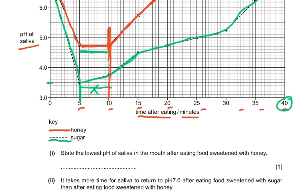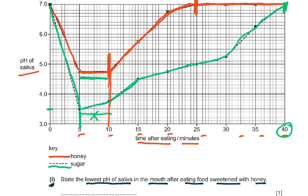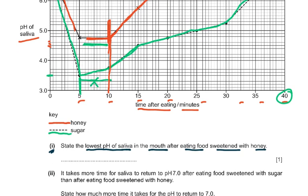Question: state the lowest pH of saliva after eating foods sweetened with honey. Looking at the graph, the lowest point for honey is approximately 4.75. So the answer is 4.75 — remember to include the decimal point. That gives you one mark.